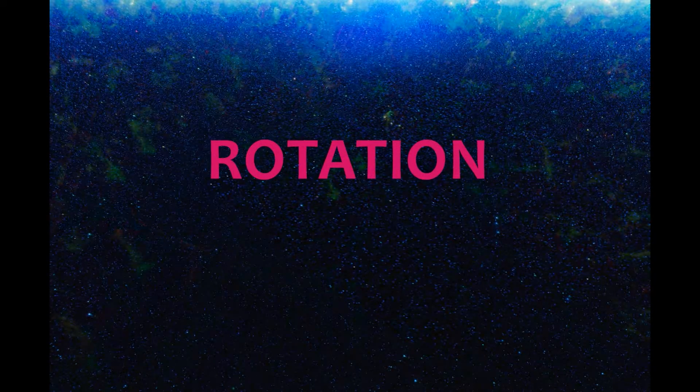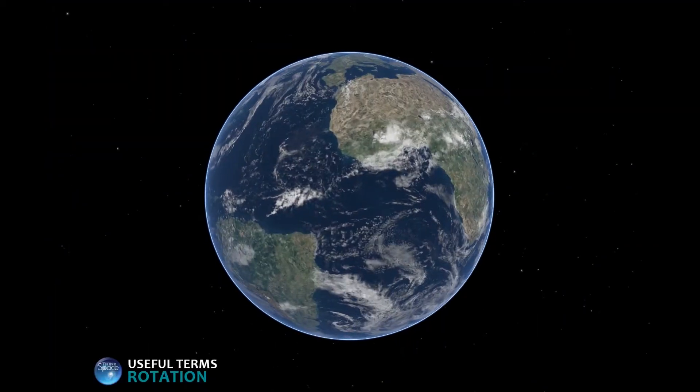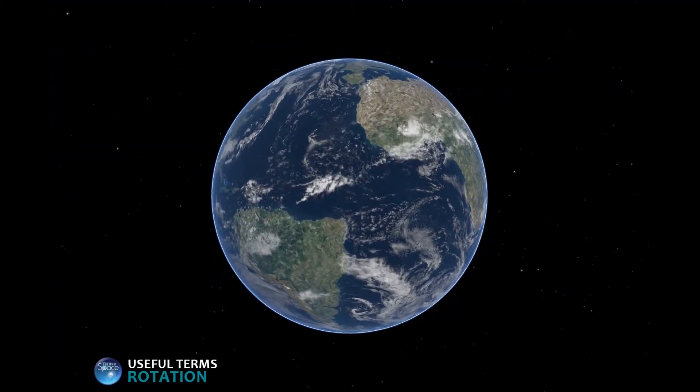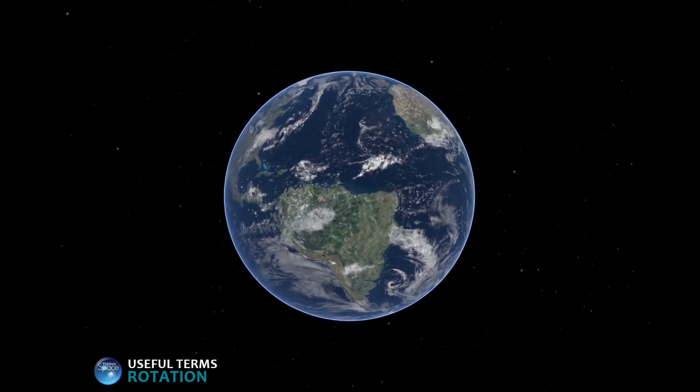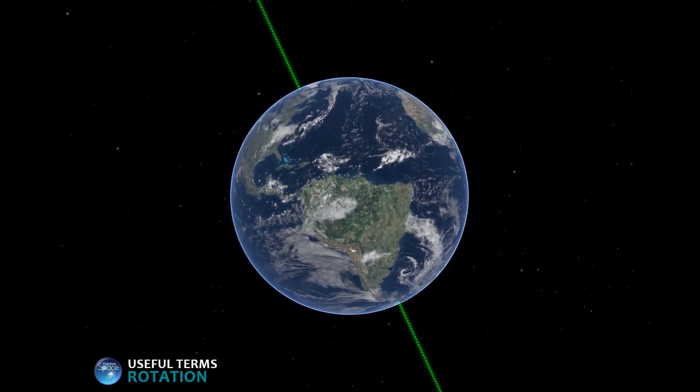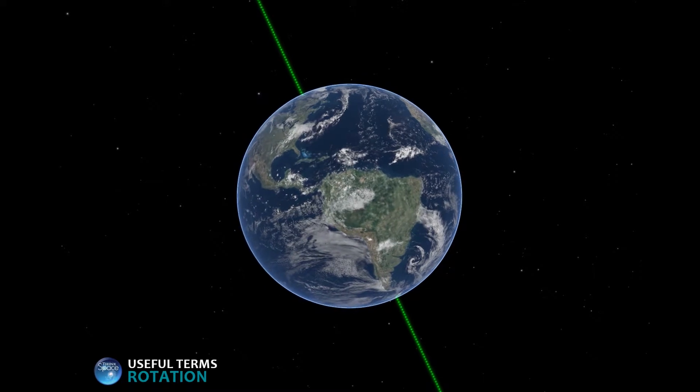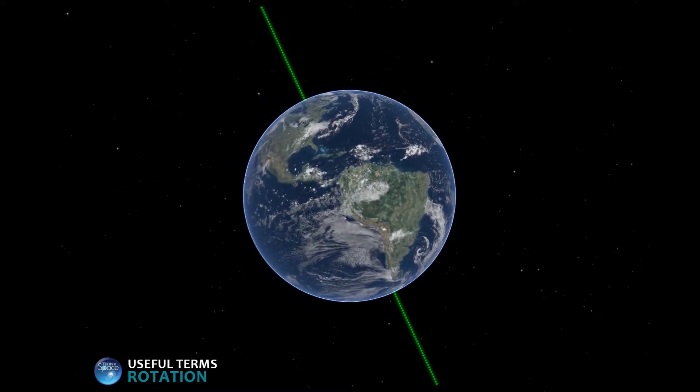Rotation. Rotation refers to the spinning of the Earth around its axis. In that case, it might help to show you Earth's axis. There we go. The motion is similar to the rotation of a barber pole or a disco ball.